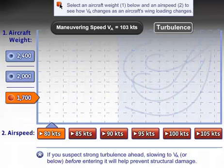Here's an interesting exercise involving maneuvering speed. Maneuvering speed here is shown to be 103 knots, but that's only good at the aircraft's max gross weight.